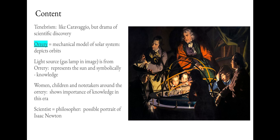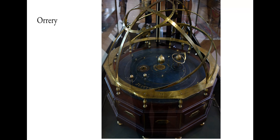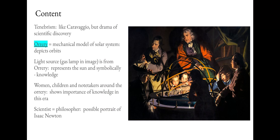The light source in the painting is a gas lamp inside the orrery. An orrery is a mechanical model of the solar system that depicts the orbits of the planets. You would hand-crank it and the planets would move and orbit around the sun. The gas lamp, of course, represents the sun, but also represents knowledge itself.